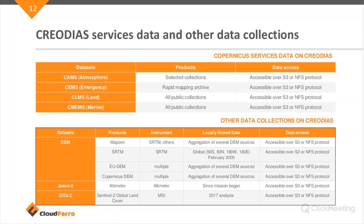These data are available through S3 or NFS protocol. If you are interested in different thematic layers or thematic datasets, you can access them one by one, download them, or simply open a virtual machine and use them in software on your virtual machine. Other data collections available include digital elevation models from various products: ASTER, SRTM, EU-DEM, and Copernicus-DEM. We also have data from Jason-3, which is a kind of precursor of Sentinel-6, and we hope that data from Sentinel-6 will soon be available on CreoDias.